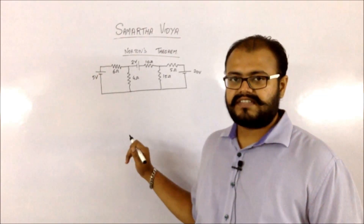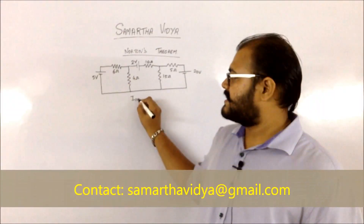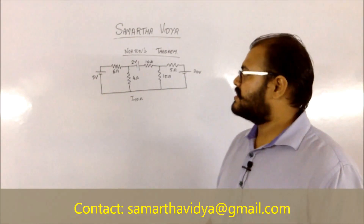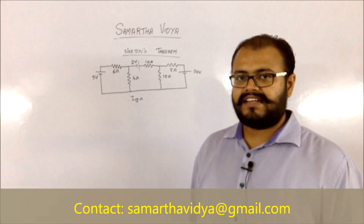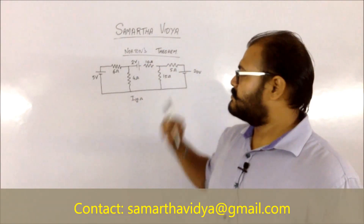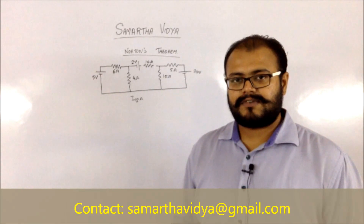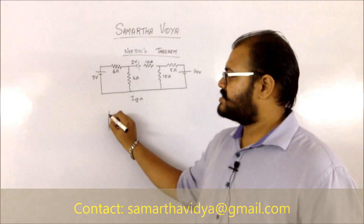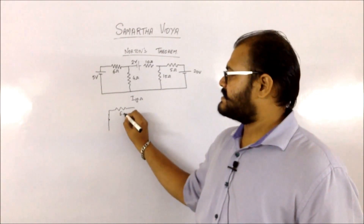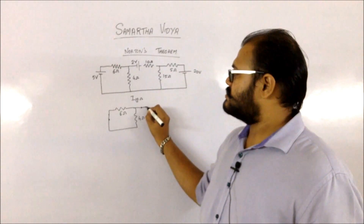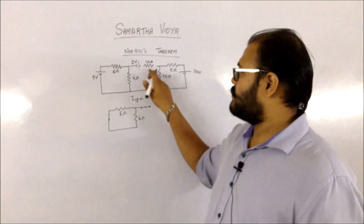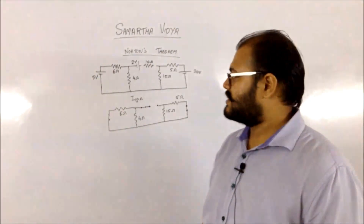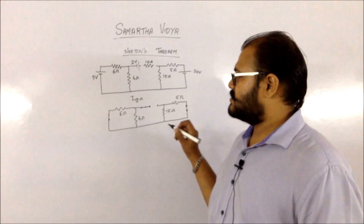Let us try to understand this theorem with an example. In this circuit, I need to find the current flowing through the 10 ohm resistance. The first step is to find Rth. Since we need to find it for the 10 ohm resistor, you need to remove it from the circuit. Once you remove the 10 ohm resistance, you replace the sources with their equivalent resistance — the voltage source is short circuited, leaving the 5 ohm resistance as such. The voltage source is also short circuited, and since we have already removed the 10 ohm resistor, there is no current source to replace.